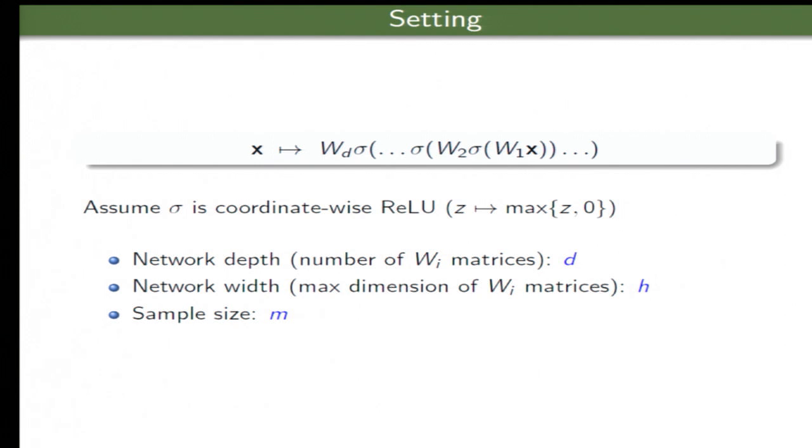So the setup is like that. We have D layers, matrices W1 through WD. And for simplicity, just the ReLU activations coordinate-wise. We have D is the depth of the network, H is the max dimension of any of the matrix, including the input dimension. And M is going to be the sample size. So that's the notation.